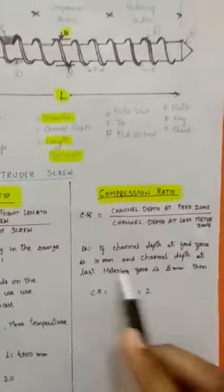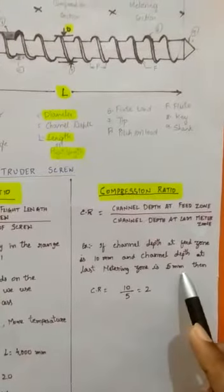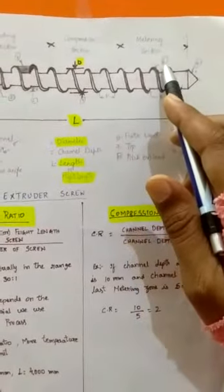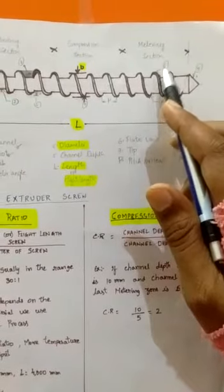And channel depth at last meter zone is 5 mm.